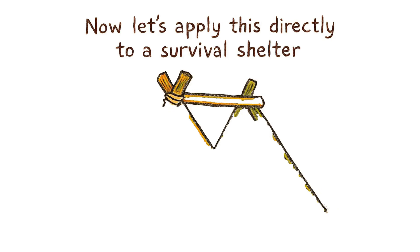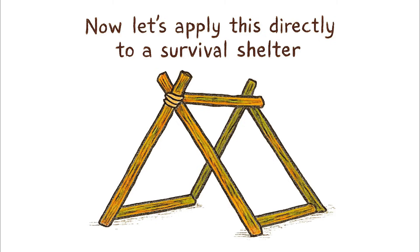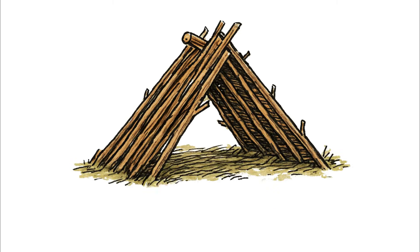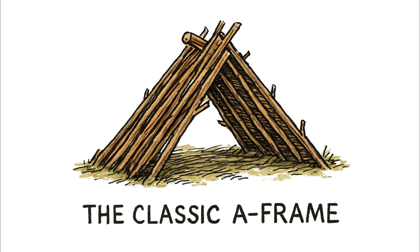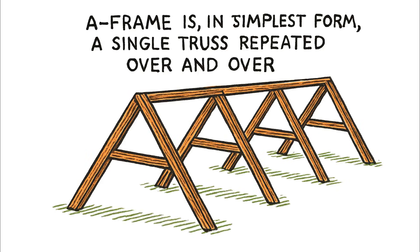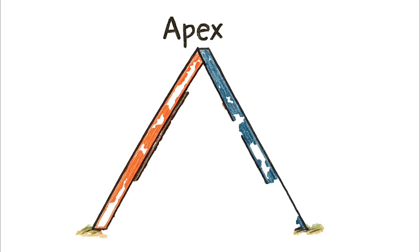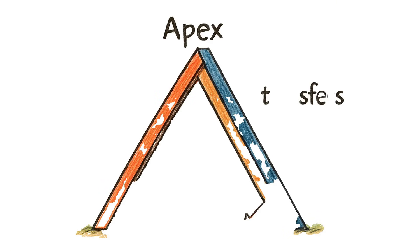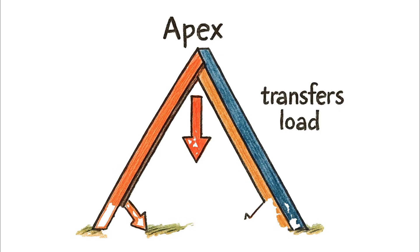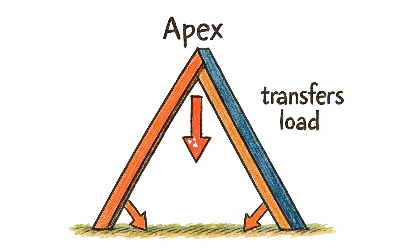Now, let's apply this directly to a survival shelter. The classic A-frame is the most direct application of these principles. An A-frame is, in its simplest form, a single truss repeated over and over. Its two main angled legs form a triangle that efficiently transfers any load from the apex — the peak — straight down the legs and into the ground.